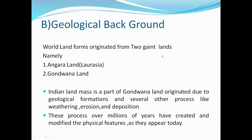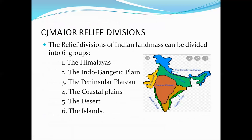Coming to the geological background. The world's landforms originated from two ancient lands, namely Angara Land and Gondwana Land. The Indian landmass is part of Gondwana Land, formed due to geological processes like weathering, erosion and deposition over millions of years, which created and modified the physical features as they appear today.